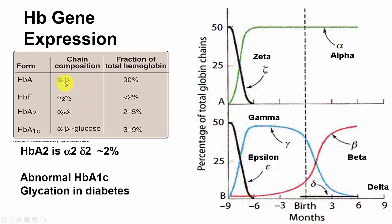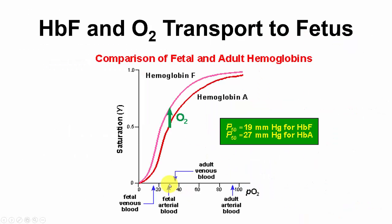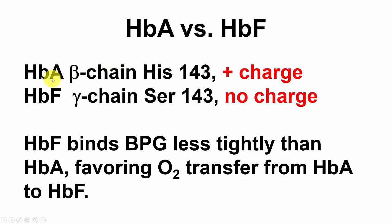Fetal hemoglobin aids in the transport of oxygen from the mother to the fetus. Fetal hemoglobin has a higher affinity for oxygen than adult hemoglobin, allowing the mother to transport oxygen across the placenta to oxygenate the baby's hemoglobin. Hemoglobin A beta chain has a histidine at position 143 with a positive charge, whereas fetal hemoglobin gamma chain has a serine at position 143 with no charge. So fetal hemoglobin binds BPG less tightly than hemoglobin A, favoring O2 transfer from hemoglobin A to hemoglobin F.